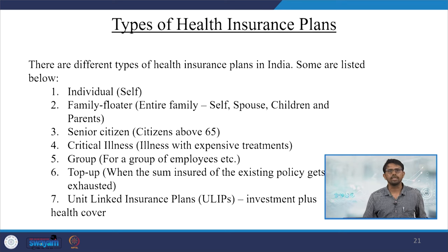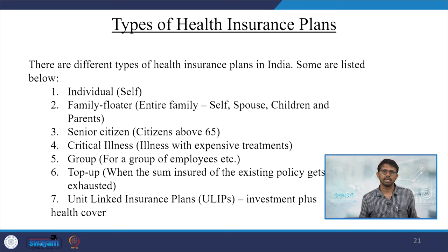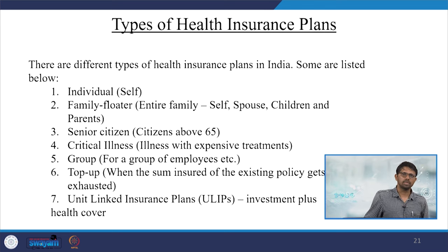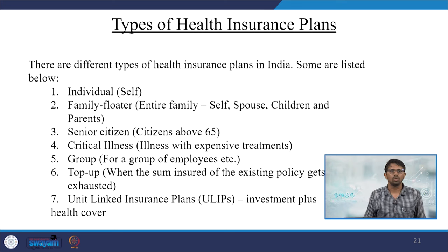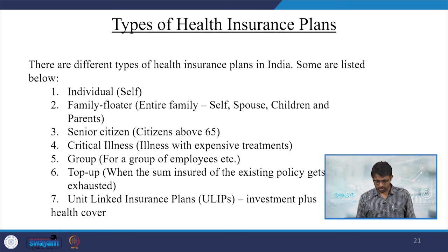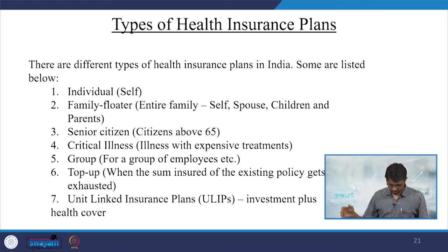Types of health insurance plans in the Indian context include: individual or self-insurance based plans, family floater plans covering the entire family, senior citizen plans (usually above 65 years), critical illness plans for expensive treatments, group plans for employees, top-up plans when the sum insured of an existing policy is exhausted, and ULIP (unit-linked insurance plans) — which combine investment plus health cover.